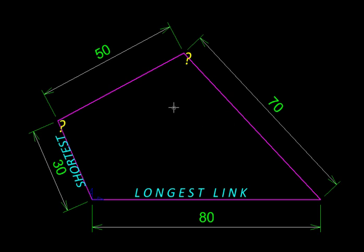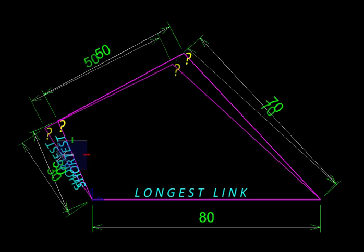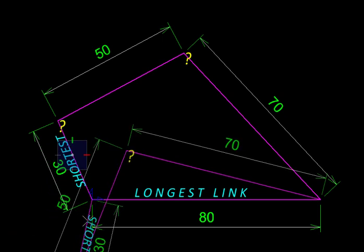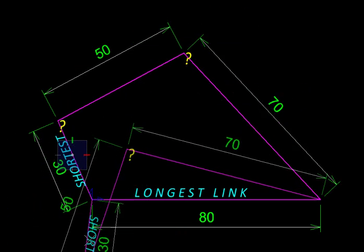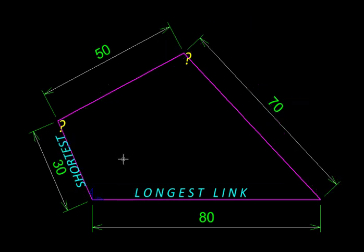So Grashof's criterion says we should have a crank here. So let's test by actually dragging on one of the links. Here, the shortest link, and indeed it is capable of complete rotation.